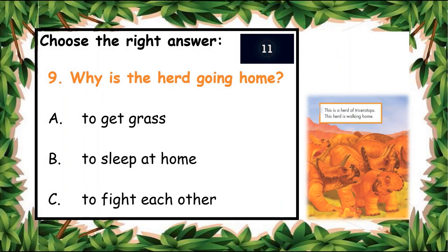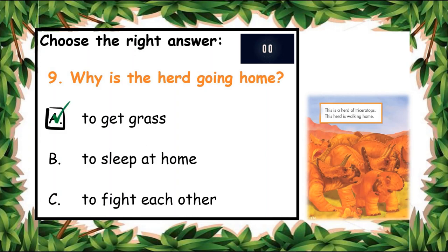The next question: why is the herd going home? A: To get grass, B: To sleep at home, C: To fight each other. What do you think? You have ten seconds to answer. A: To get grass. Yes, because they are hungry!